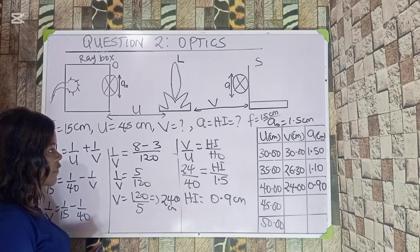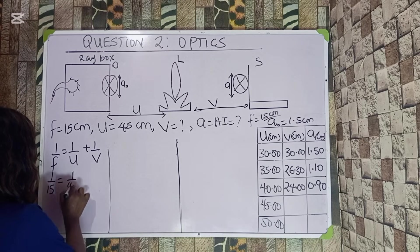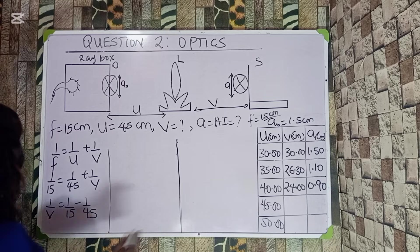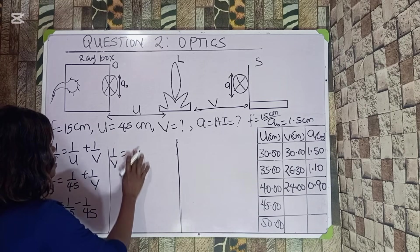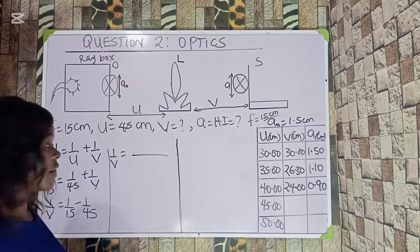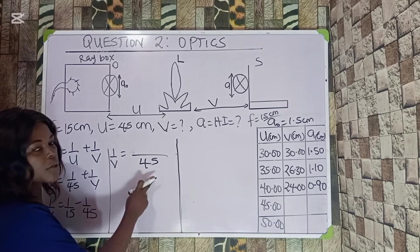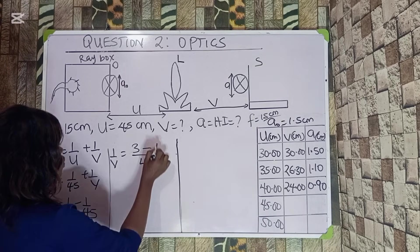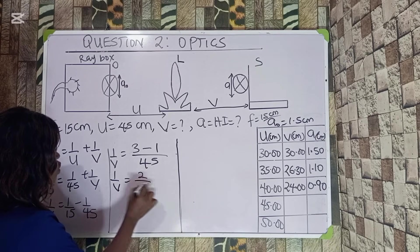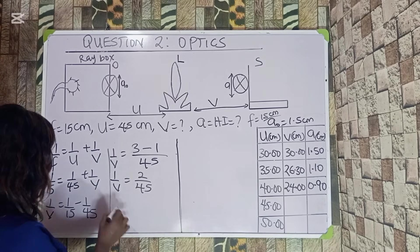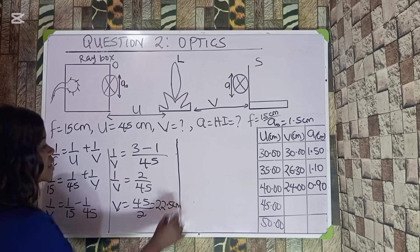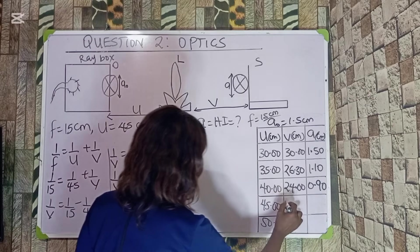For u = 45 cm: 1/15 = 1/45 + 1/v, so 1/v = 1/15 − 1/45. The LCM of 15 and 45 is 45, giving 1/v = 3/45 − 1/45 = 2/45. Therefore v = 45/2 = 22.5 cm. I record v = 22.50 cm.